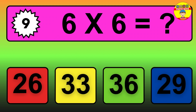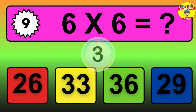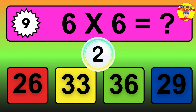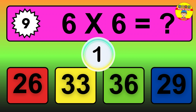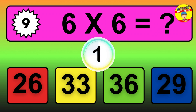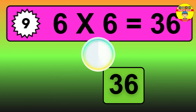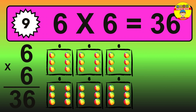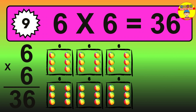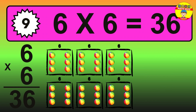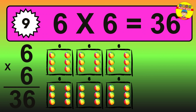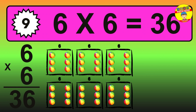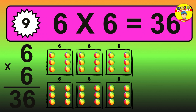Question 9. 6 times 6 equals what? The answer is 6 times 6 is 36. To calculate, we have 6 groups with 6 balls each one. So how many balls do we have? 36 balls.